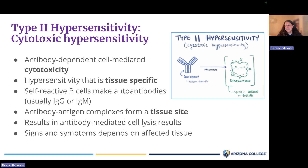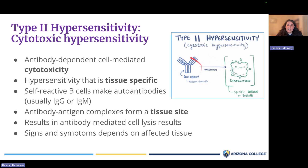Moving on to type 2 hypersensitivities, also called cytotoxic hypersensitivities. Cyto means cell, and toxic means harmful — these are hypersensitivities where the problem is caused by a cell getting killed. In type 2 hypersensitivities, there is antibody-dependent cytotoxicity: an antibody binds to a specific cell and destroys it. A defining feature is that they are tissue-specific — those antibodies are killing specific types of cells, like blood cells. This happens when autoantibodies recognize self-antigens, bind to those cells, and the immune system then attacks and destroys them.